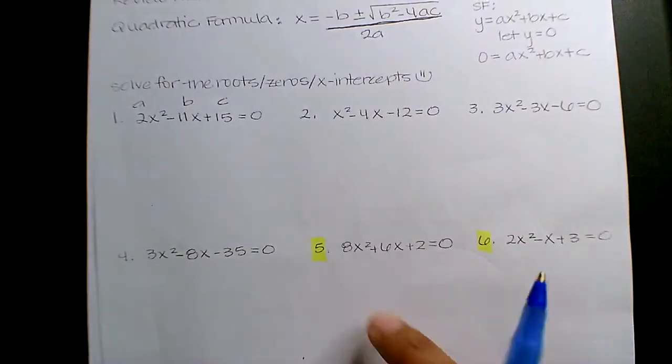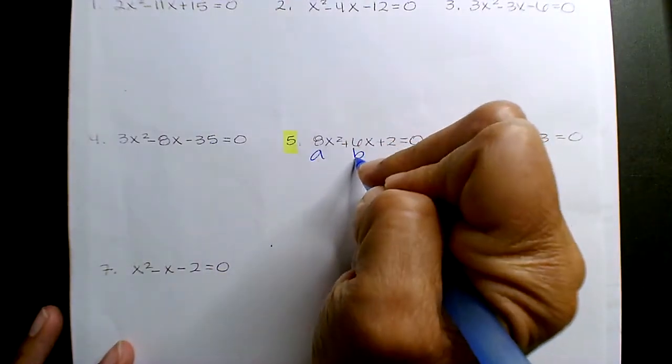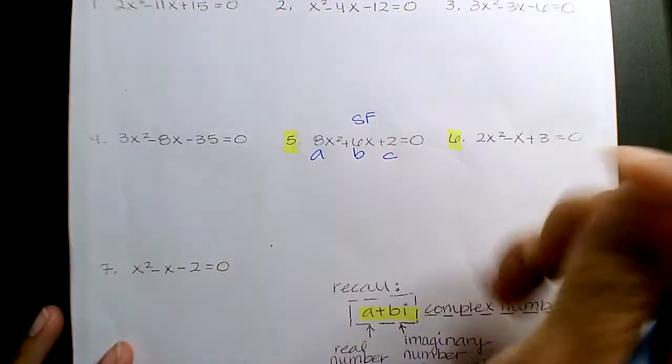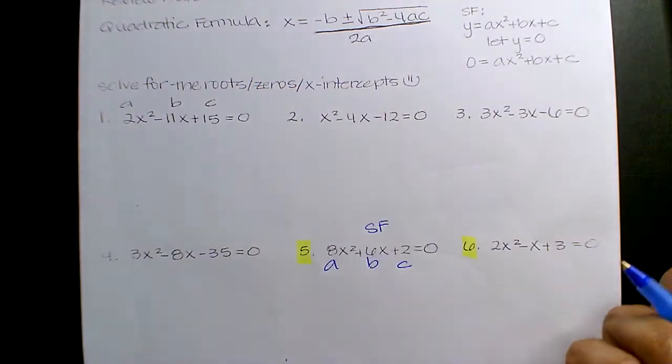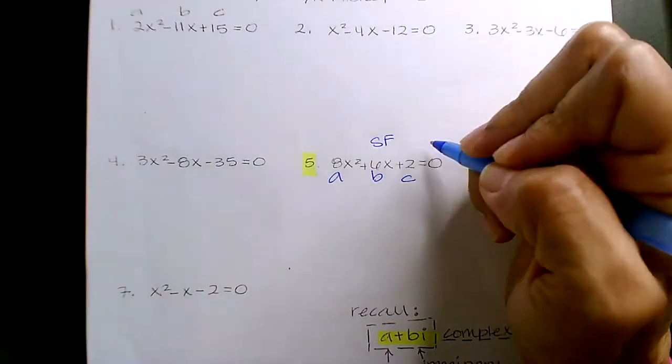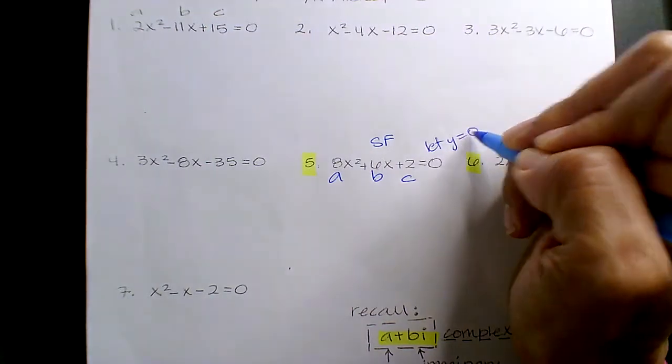All right, quadratic formula A-B-C. This is in standard form. We're going to look for our roots. Remember, you want your roots, your zeroes, your intercepts, your solutions. You always let y equals zero and then you solve for x.